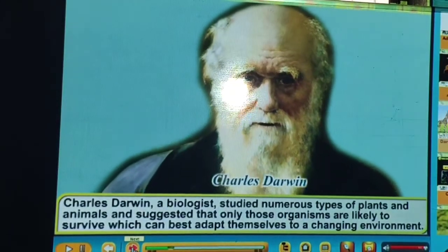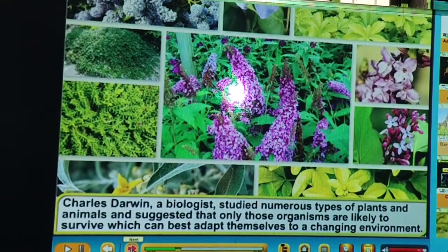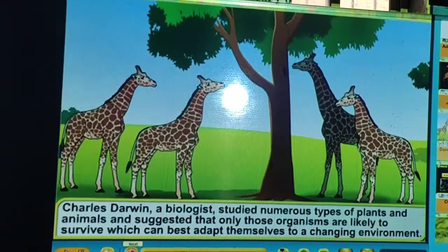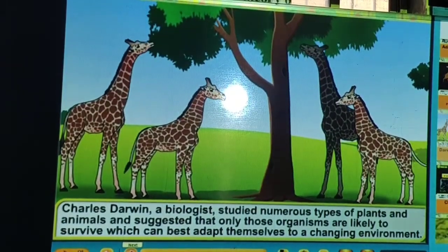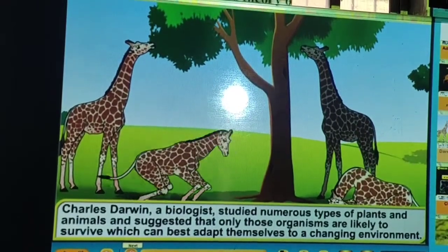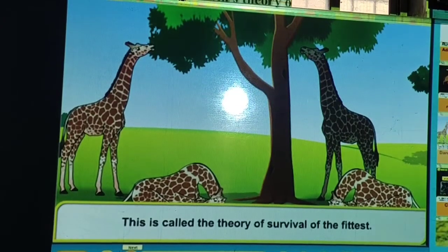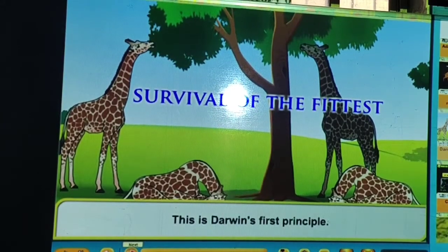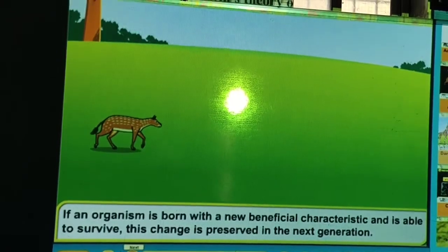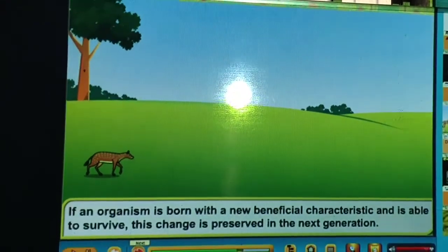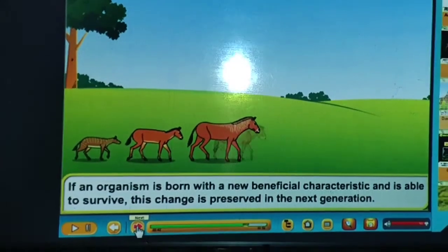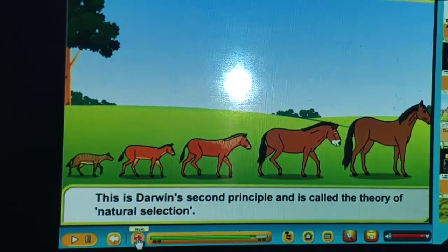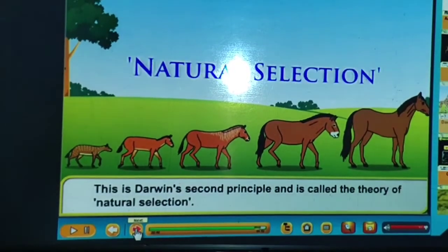Darwin's theory of evolution: Charles Darwin, a great biologist, studied numerous types of plants and animals and suggested that only those organisms are likely to survive which can best adapt themselves to a changing environment — this is called the theory of survival of the fittest. If an organism is born with a new beneficial characteristic and is able to survive, this change is preserved in the next generation — this is called the theory of natural selection.